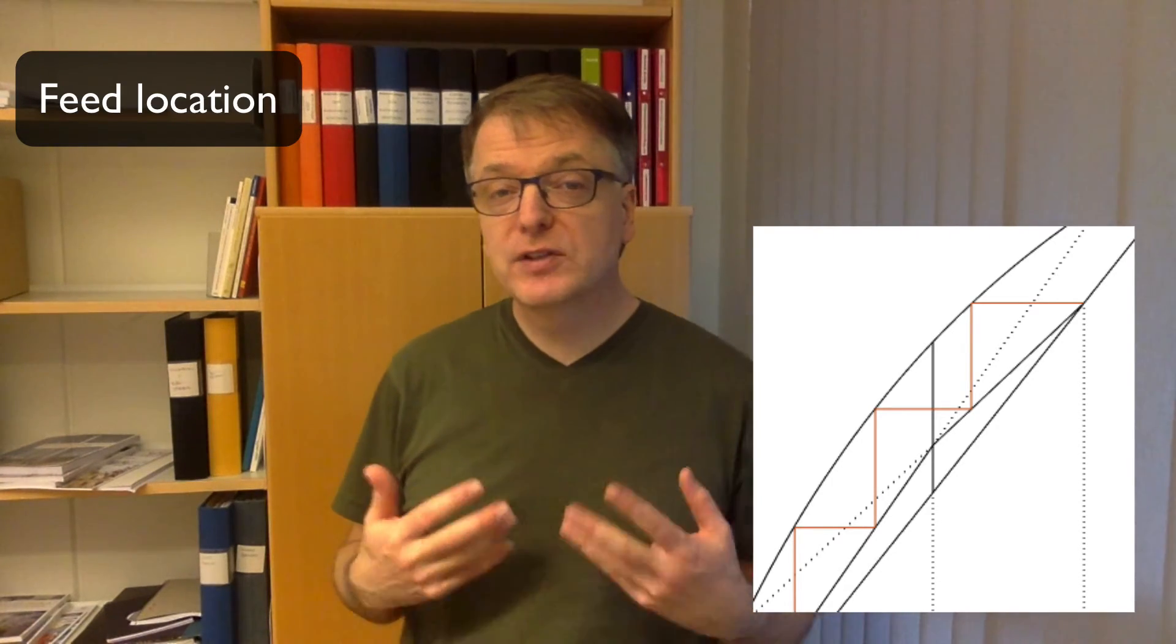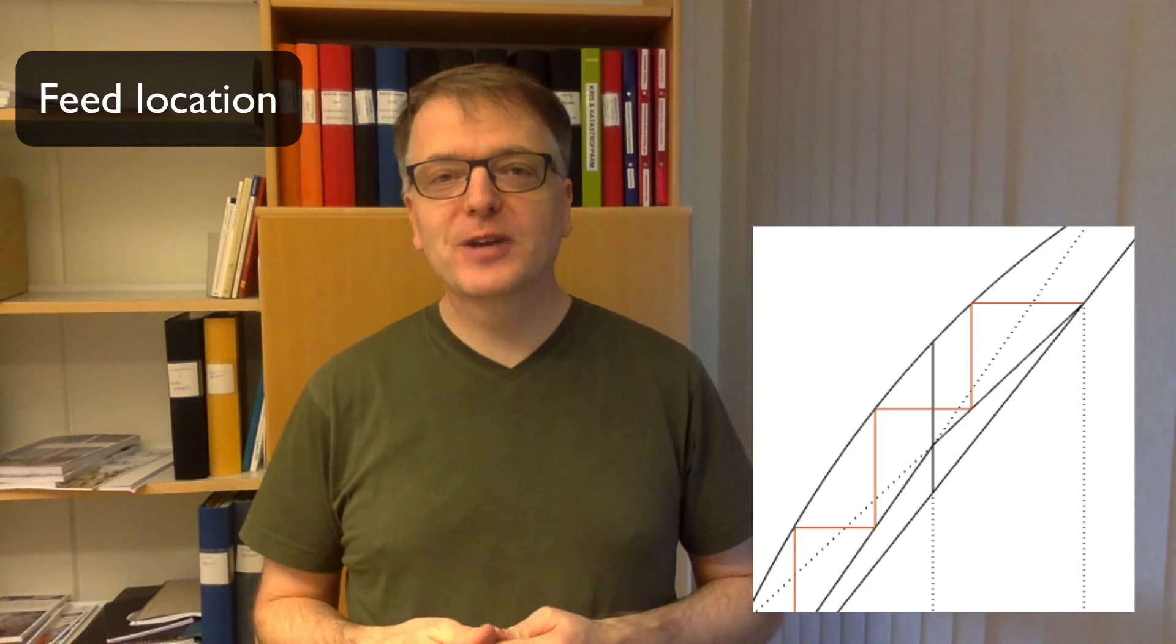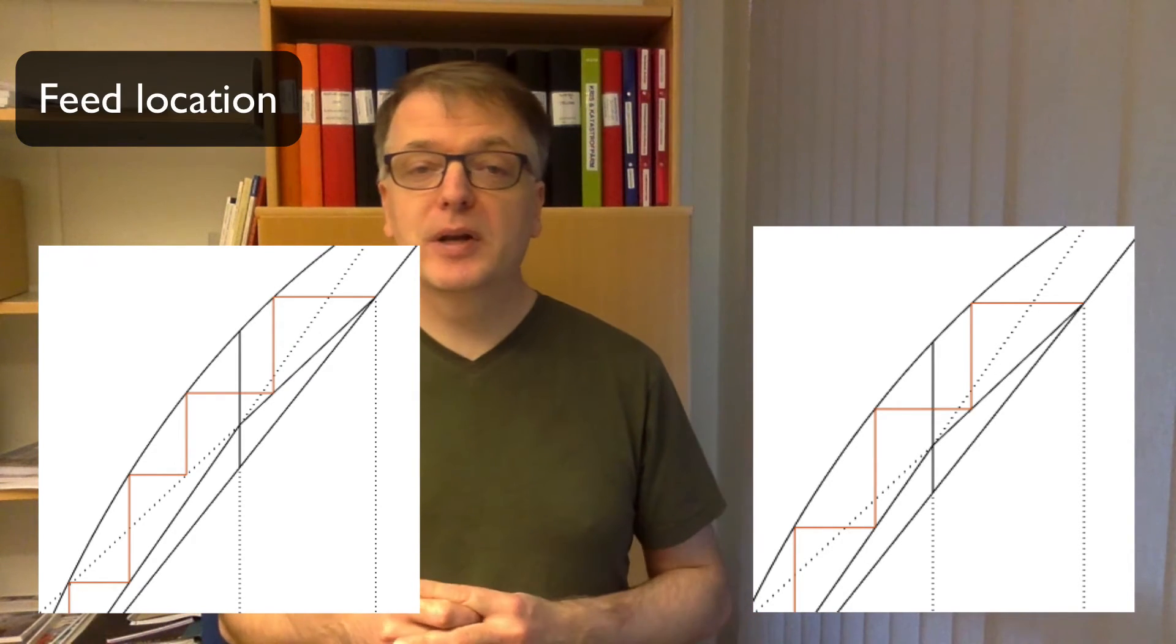So what if you have a sub-optimal feed location? Well, then you figure out where you actually have your feed location. The tricky part is that you need to know it expressed in equilibrium stages, since the triangles you draw in McCabe-Thiele's graphical method are equilibrium stages, not physical trays. But if you know that, then draw so many triangles